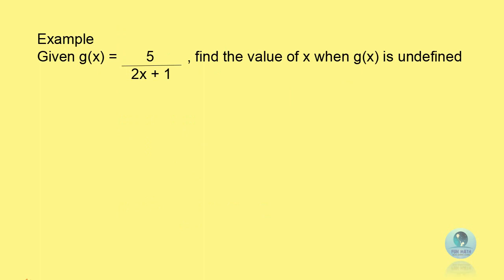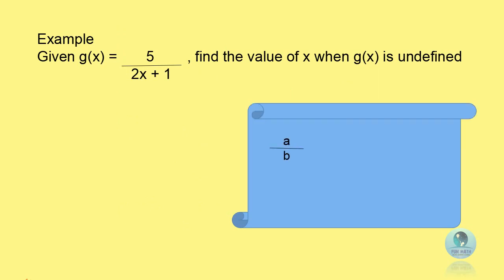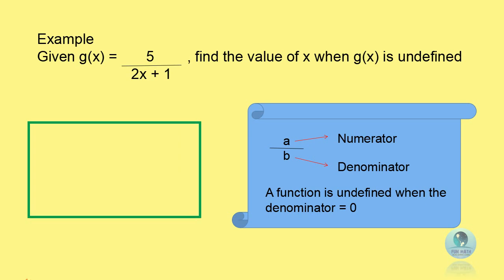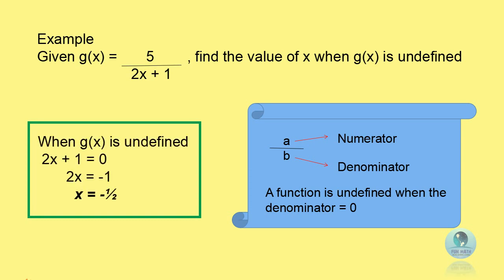Look at this example. Given function g(x) equals to 5 divided by 2x plus 1, find the value of x when function g(x) is undefined. To answer this question, you have to understand the basic principle of fraction. The bottom part of the fraction is called the denominator. You cannot put a 0 in your denominator — for example, 5 divided by 0 or 1 divided by 0 gives an error in the calculator. For this function, your denominator is 2x plus 1. When the function is undefined, 2x plus 1 equals to 0, and you get the answer x equals to negative 1 over 2.